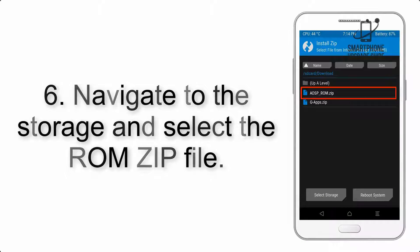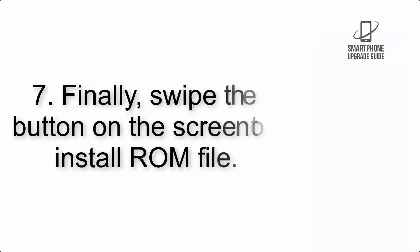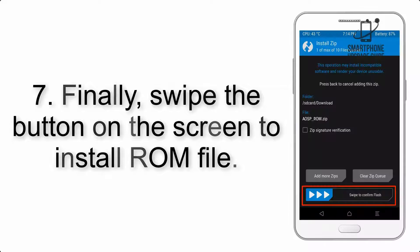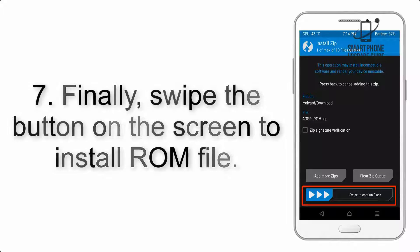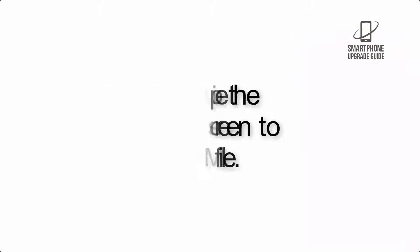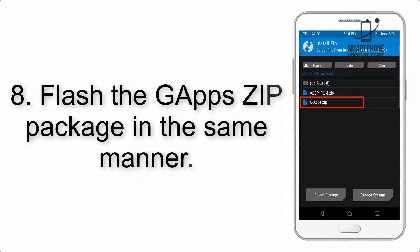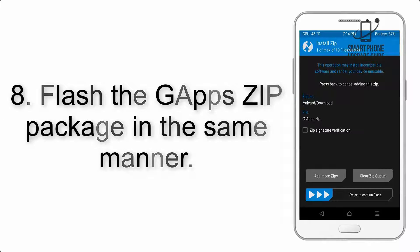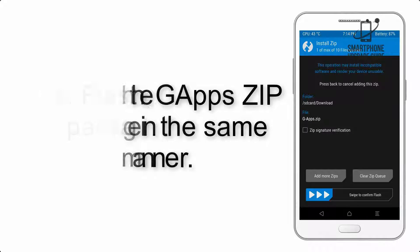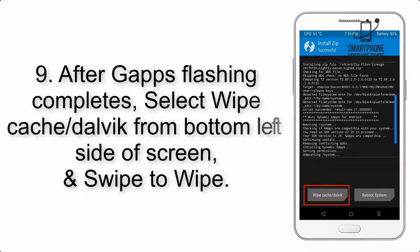Step 5: Go back to the recovery main screen and tap on the Install button. Step 6: Navigate to the storage and select the ROM zip file. Step 7: Finally, swipe the button on the screen to install the ROM file.